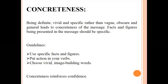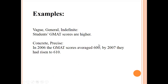Being definite, vivid, and specific rather than vague, obscure, and general leads to concreteness in a message. Facts and figures presented in the message should be specific — that is concreteness. To fulfill this requirement, be very specific about facts and figures, put action in your work, and choose vivid image-building words. For example, instead of the vague statement 'Students' GMAT scores are higher,' you should say 'In 2006, the average GMAT score was 600; by 2007 it had risen to 610.' Correct concreteness reinforces confidence.